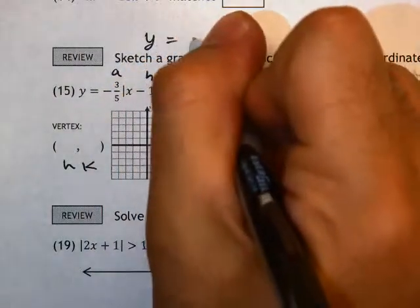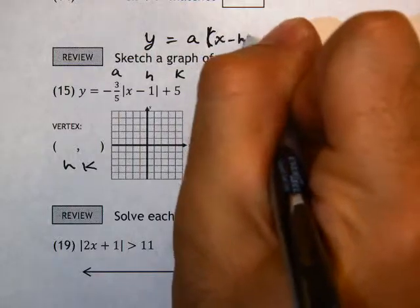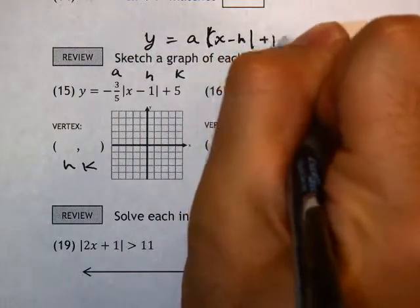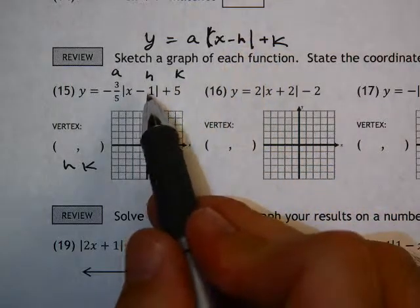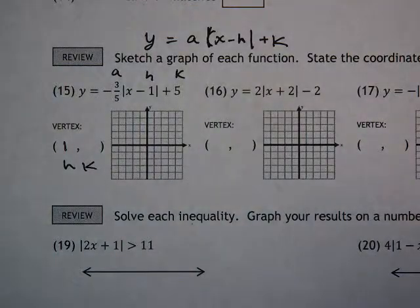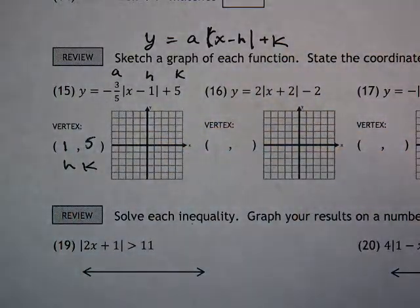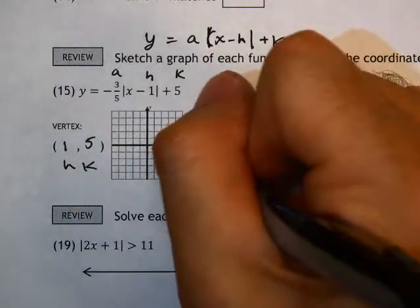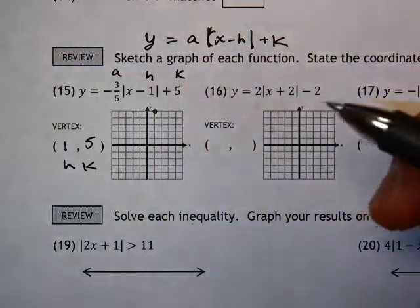The original graphing form is A times X minus H plus K on the outside. Because of that original equation, that minus tells us to change the sign here. So that becomes positive 1 for the H value, and the K outside is positive 5. That does not change. So our vertex is positive 1, positive 5. One, two, three, four, five. There's our vertex up there.